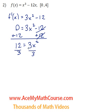Now we can divide both sides by 3. 12 divided by 3 is 4. Now we can take the square root of both sides. x is plus or minus the square root of 4, which is 2.